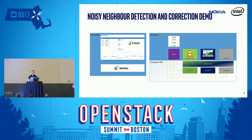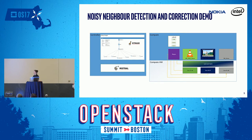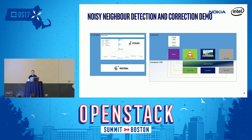The demo itself consists of a control node and a compute node. On the control node, we have Vitrage, and we're going to see the entity graph and all of the elements in operation on the compute node. Mistral is also running on the controller. From the compute side, we're going to have three virtual machines. The first one is a video server VM that's going to stream a video to a video client VM. The third VM on the compute node is where we're going to run a stressful application. Each of these virtual machines is pinned to an isolated set of cores.